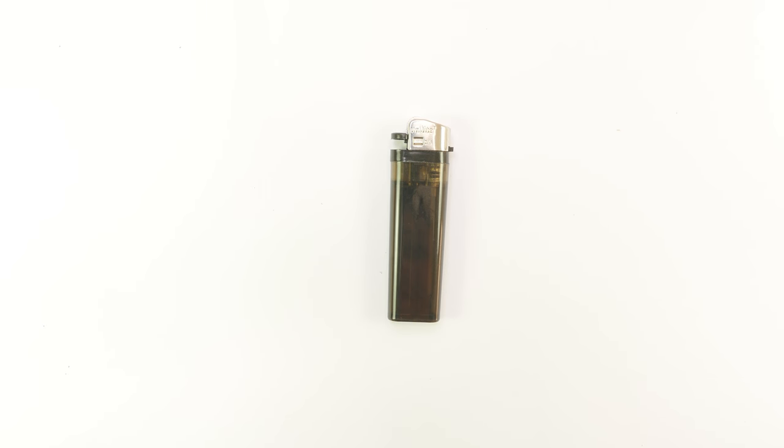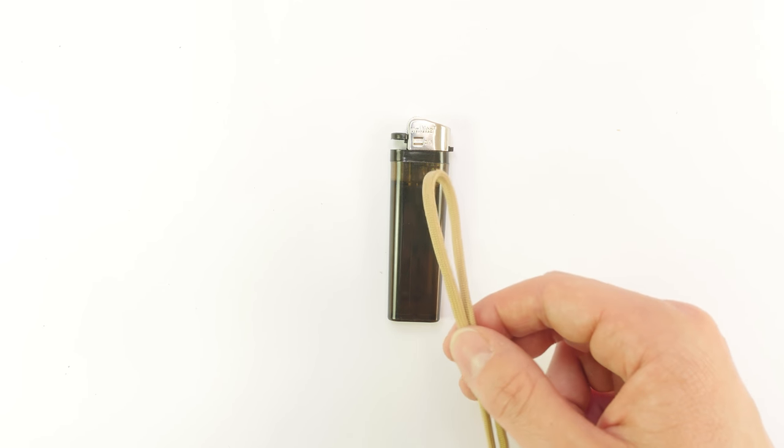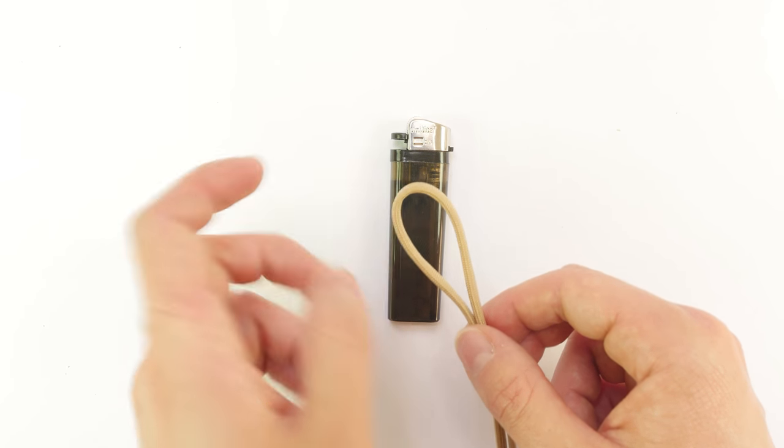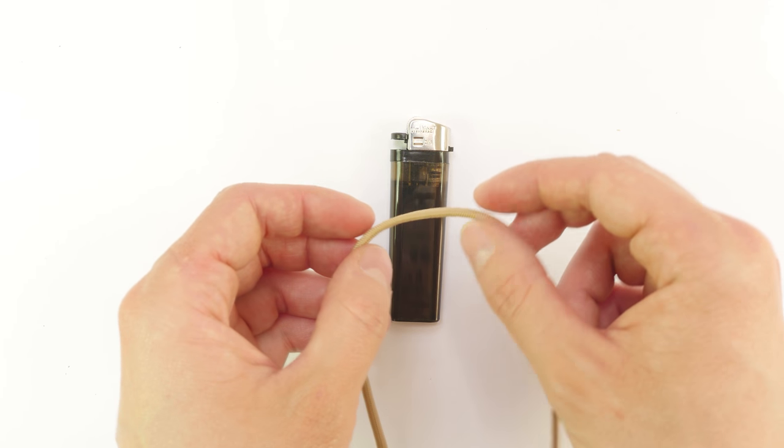We're going to start this project by taking our piece of paracord and we're going to fold it in half. At the middle point, we're going to place our cord behind the lighter.